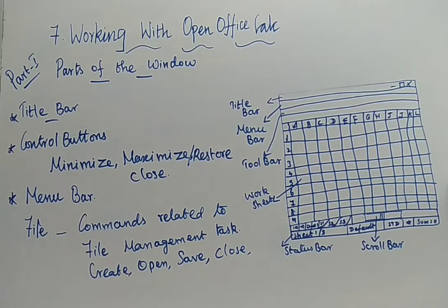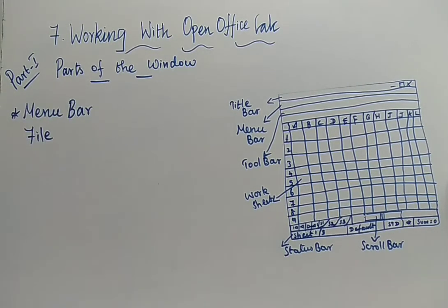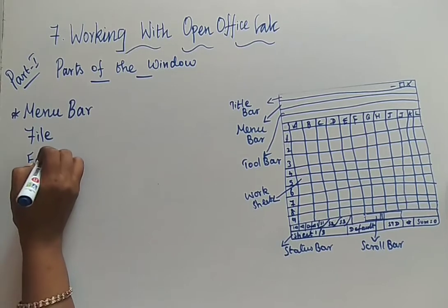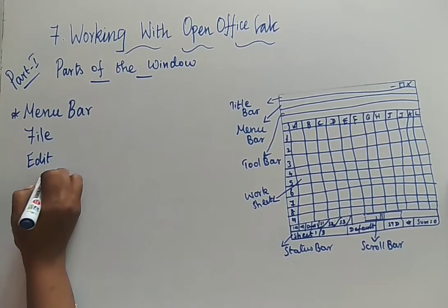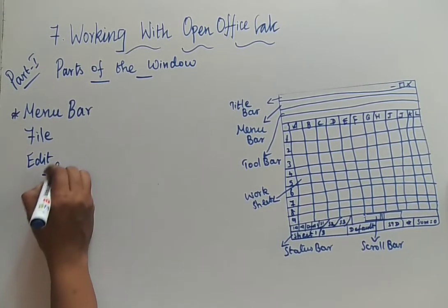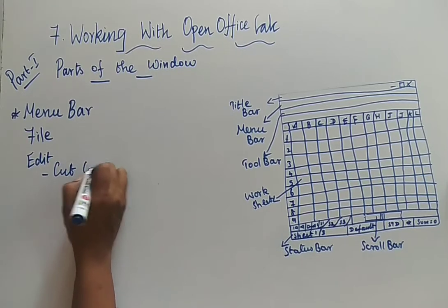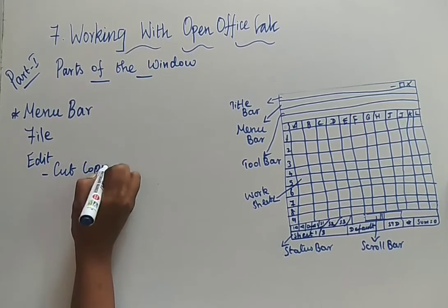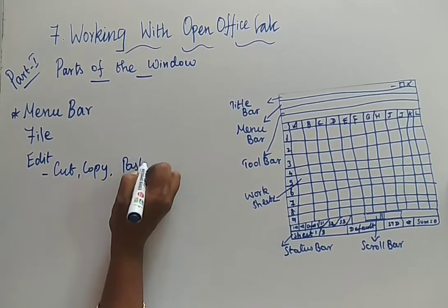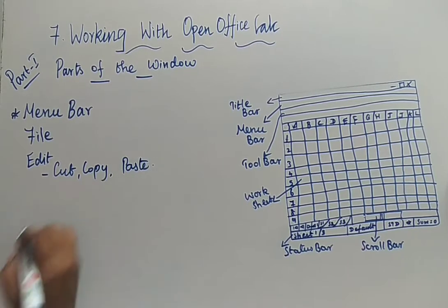Next it is your Edit menu. Under the edit menu, what commands will you have? You are going to have Cut, Copy, Paste. What formatting? Everything will be available under Edit. Next one is your View menu. Under the View menu, by the name itself — you are going to view something. By means of this, you can modify the environment.